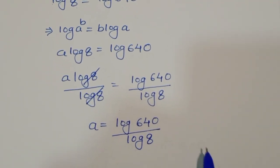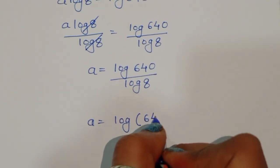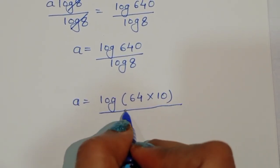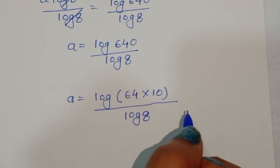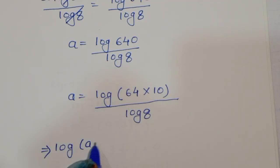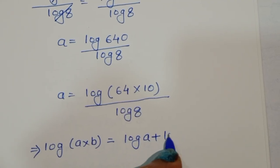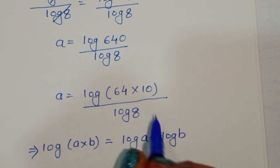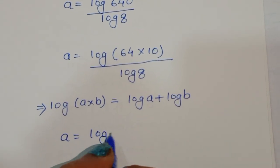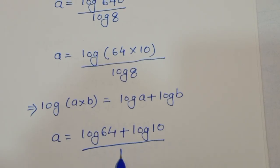Now we can write 640 as 64 times 10, so the expression becomes log of 64 times 10 divided by log of 8. We use the formula log(a × b) = log a + log b, so log of 64 times 10 becomes log of 64 plus log of 10. Therefore a is equal to log of 64 plus log of 10, all divided by log of 8.